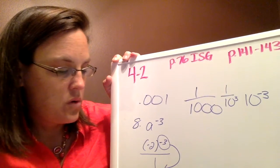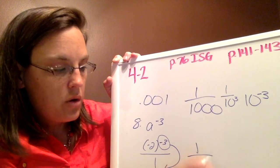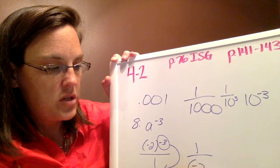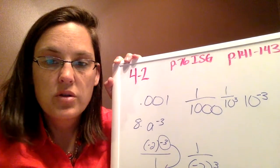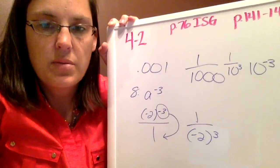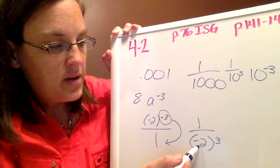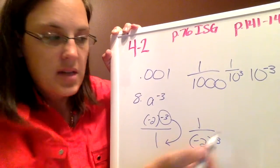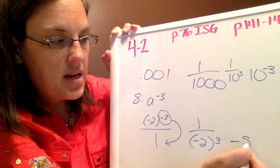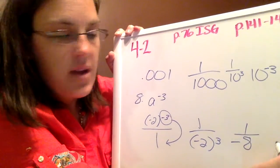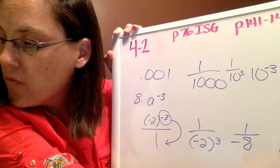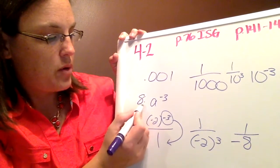So I'm going to have 1 over negative 2 to the positive 3 power. So once you move it, it becomes positive. So what we have here is negative 2 times negative 2 times negative 2, which is negative 8. So we have negative 1 eighth for number 8.